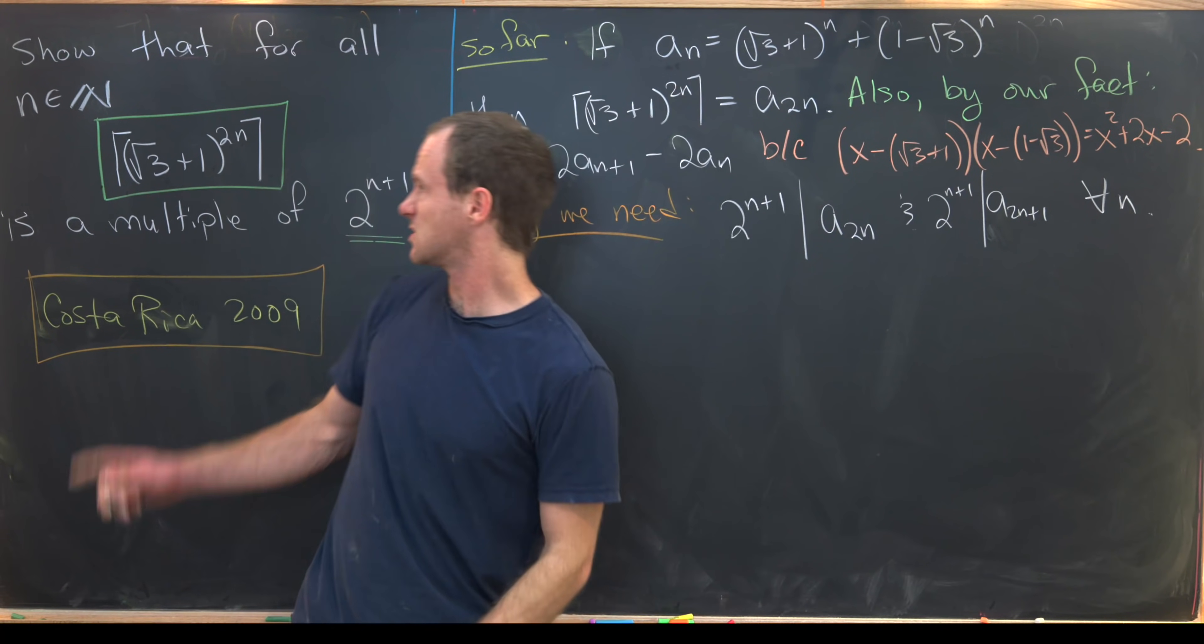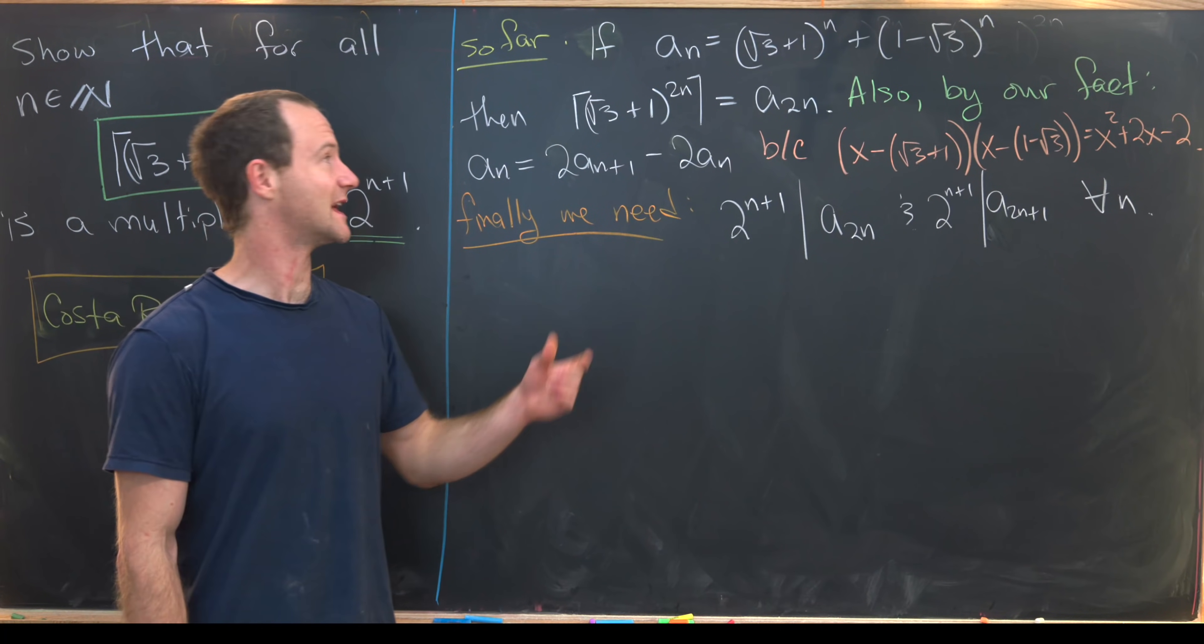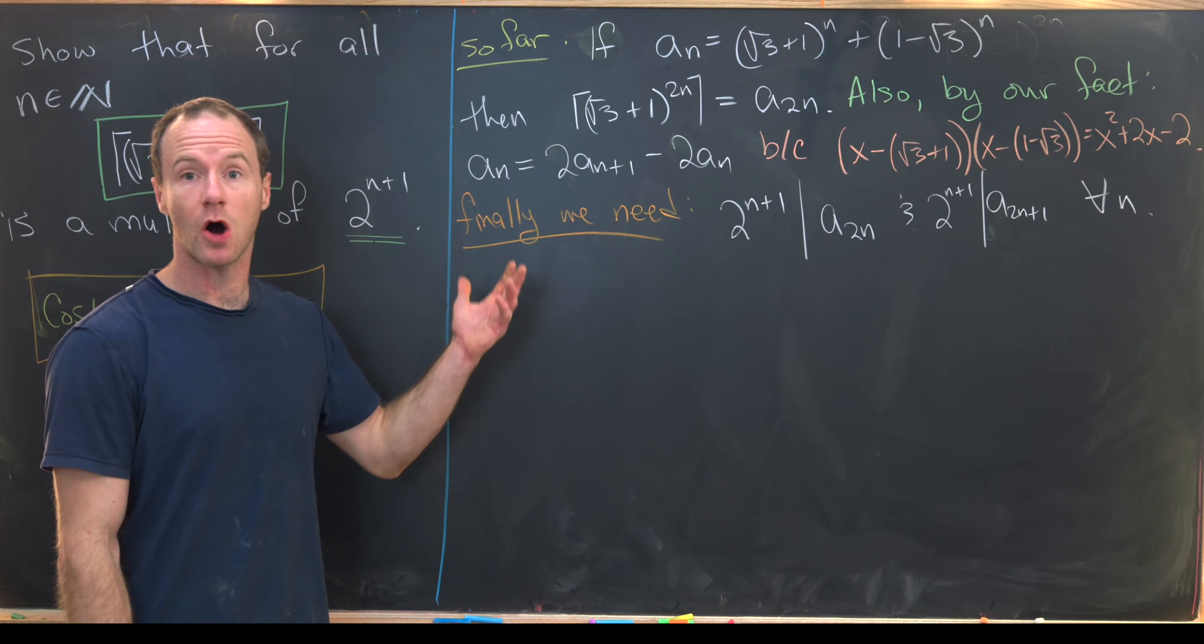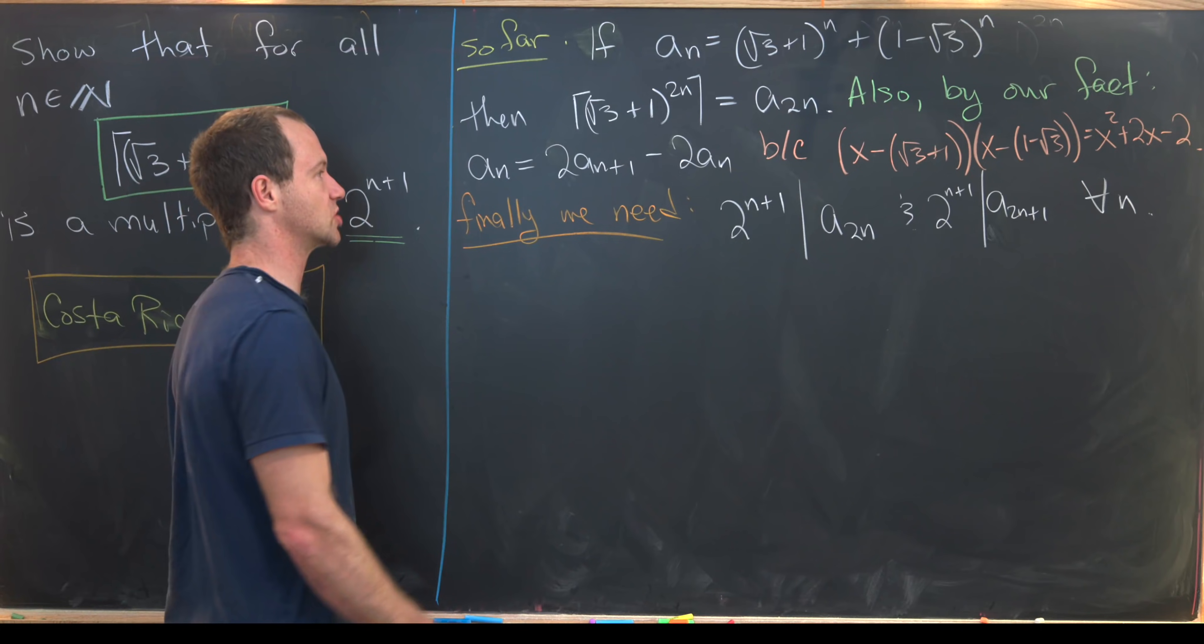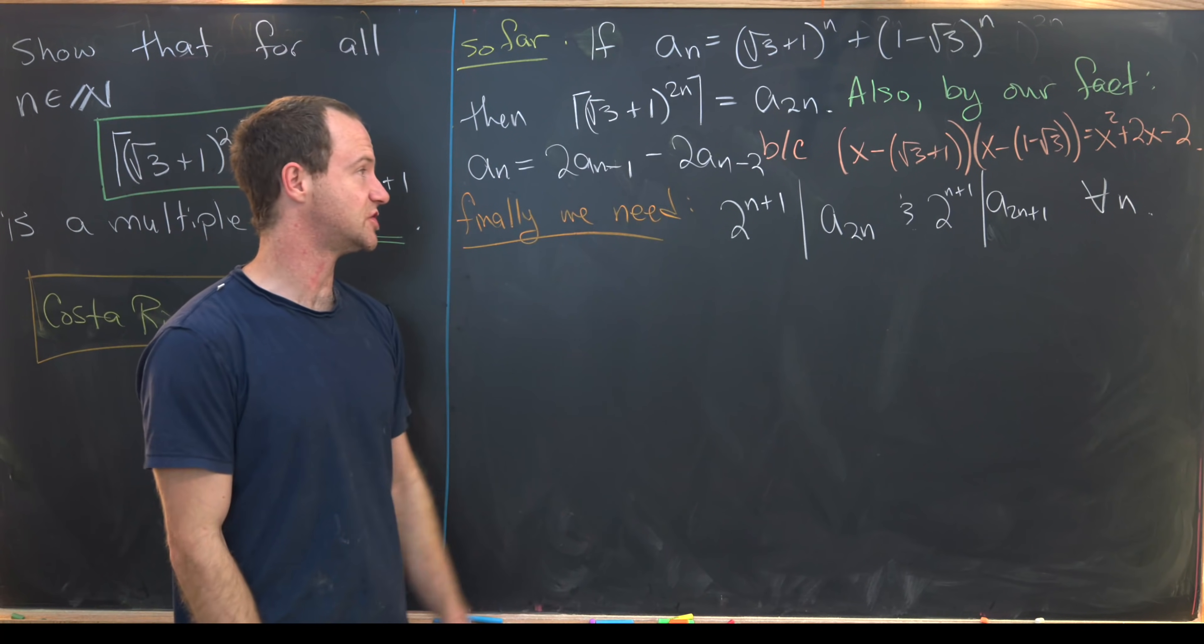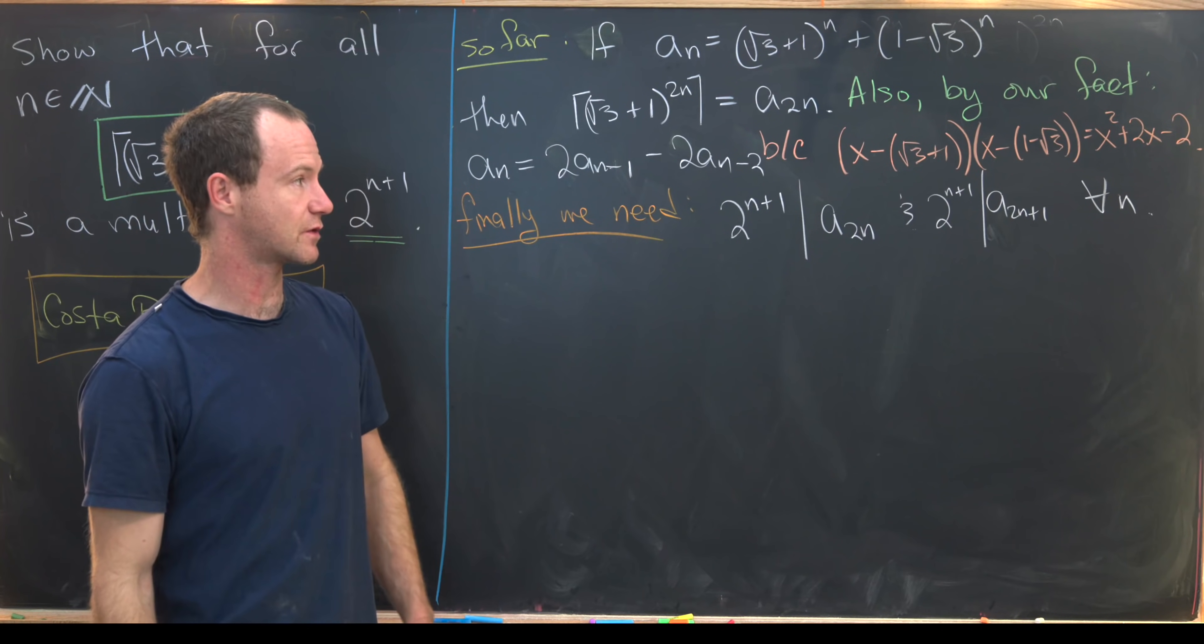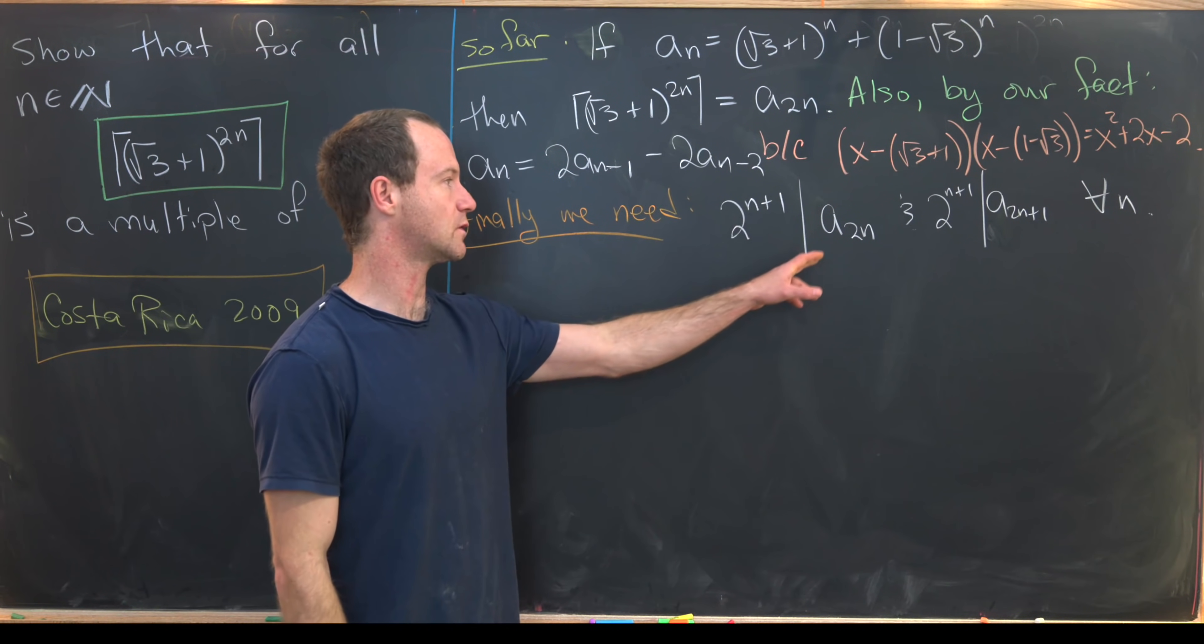Let's see what we've got so far. We built a sequence that looked a lot like our stuff over here, root 3 plus 1 to the n plus 1 minus root 3 to the n. We noticed that our goal object, which was the ceiling of this 2 nth power of root 3 plus 1 was equal to the 2 nth term of our sequence. Also, by the fact that we didn't prove, we know that this sequence satisfies the following recursion. So a sub n is equal to 2 times a sub n minus 1 minus 2 times a sub n minus 2. And that's because if you take x minus root 3 plus 1 times x minus 1 minus root 3, you get x squared plus 2x minus 2.